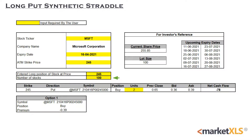A hedge will be created by going long on one stock and simultaneously buying two lots of ATM put option. The net cash flow would always come out as negative since the investor is buying the ATM put option, and hence there will be an outflow in the form of premium. In this case the net cash flow is $78, which is the result obtained when we multiply the number of units divided by the lots with the premium paid and the lot size.